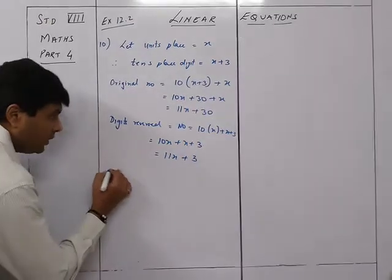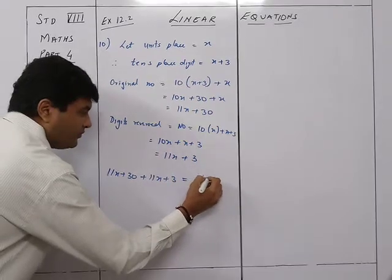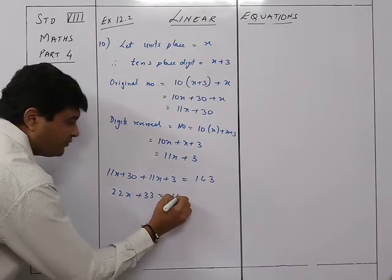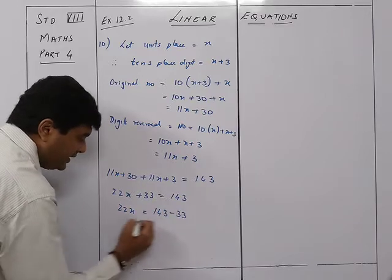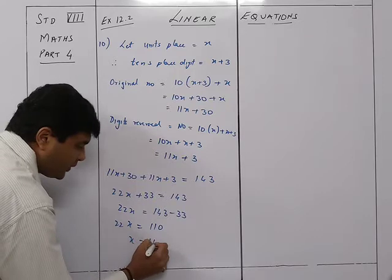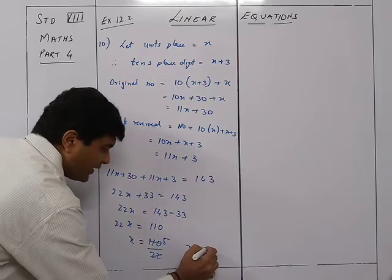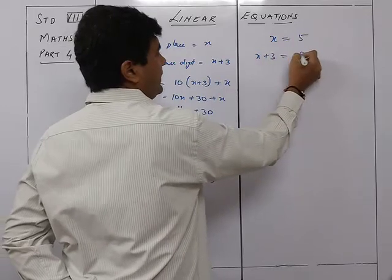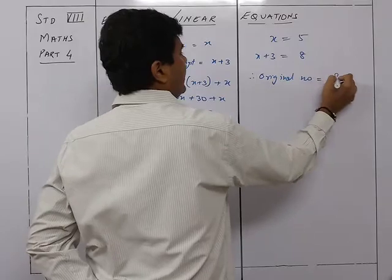We are told the sum of the two numbers is 143. So: (11x + 30) + (11x + 3) = 143, giving 22x + 33 = 143, so 22x = 110, therefore x = 5. Thus x = 5 and x plus 3 = 8, so the original number is 85.